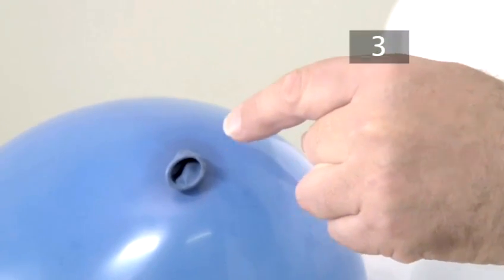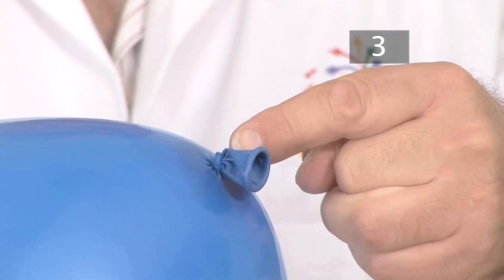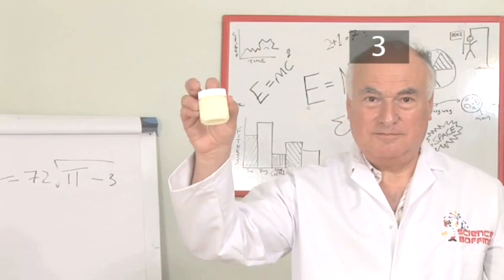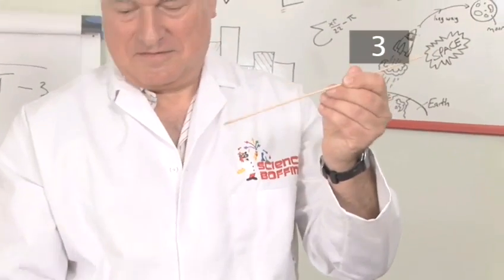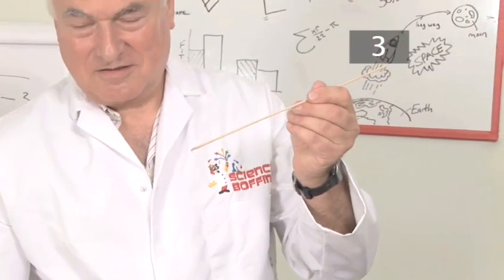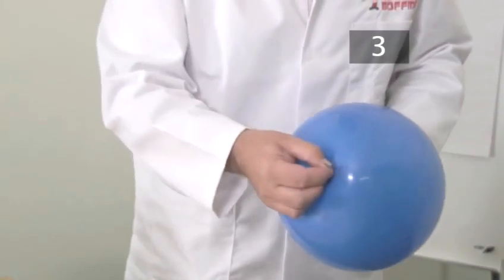You have to pierce the balloon on the top at the spot where the color is darkest. This is where it is less stretched. Put some petroleum jelly on the end of the needle before you push it through. This reduces friction when the needle pierces the balloon surface. Push the skewer through the top of the balloon first, then out of the neck.